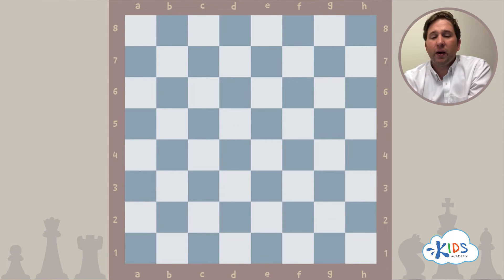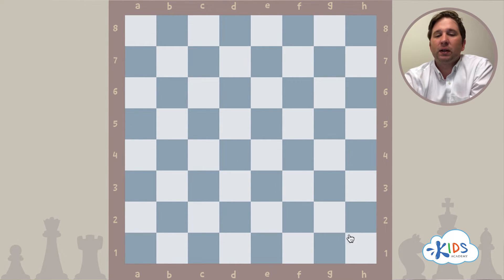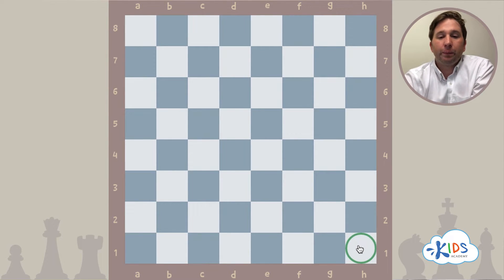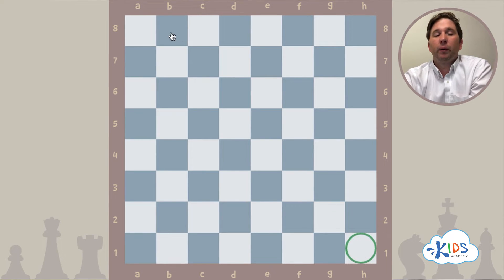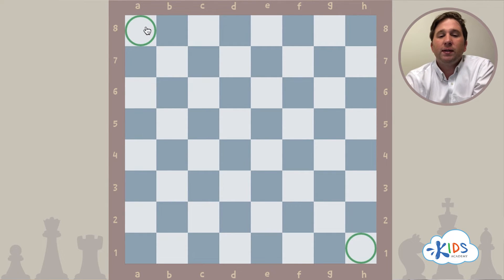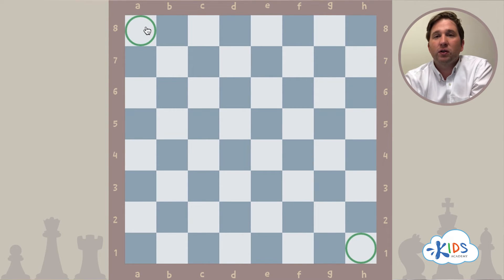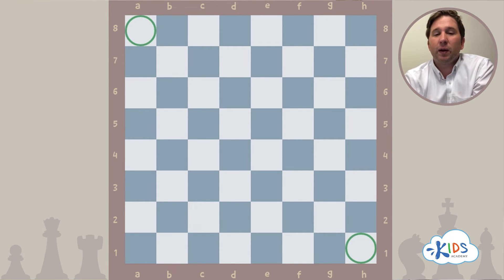Whenever you sit down to a chess board it's very important that there's always a light color square on the right-hand corner. The white player starts with the light on the right, and the black player also has a light square on the right side. This will help you set your pieces up on the correct starting colors and squares, which makes a big difference in how the pieces start and the color square they start on.